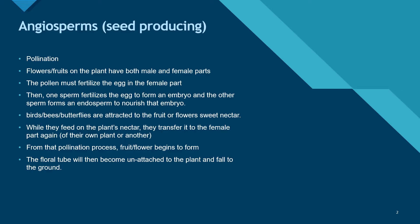Angiosperms, as we know, are seed-producing plants, which means they go through pollination. On the plants, there's typically a fruit or flower — even if you don't see it, there's usually one present. The flowers or fruit on the plant have both male and female parts, and the pollen must fertilize the egg in the female part.